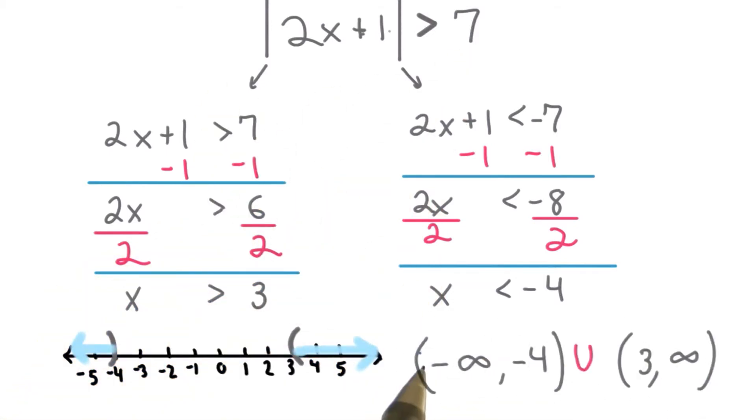In interval notation, we'd have negative infinity comma negative 4. We use parentheses because we can't include these values. Then the union because we want this or this region, and then 3 to positive infinity, again with parentheses.